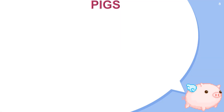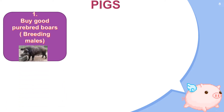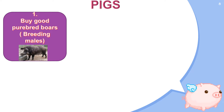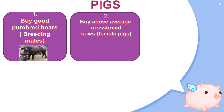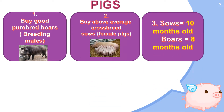The next animal that we have are pigs. If you're planning to breed pigs in the future, you have to do the following. First, buy good purebred boars — these are the male pigs. Second, buy above average crossbreed sows — the female pigs. Third, select sows for mating that are at least 10 months old, and the boars should be at least 8 months old.